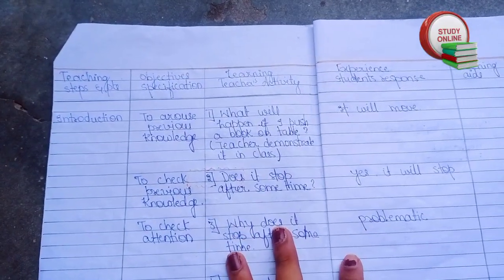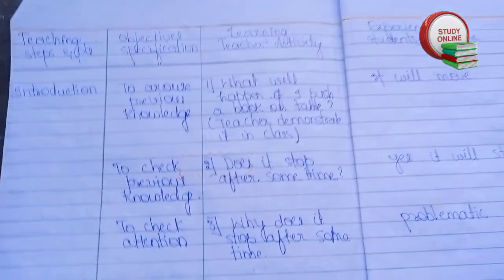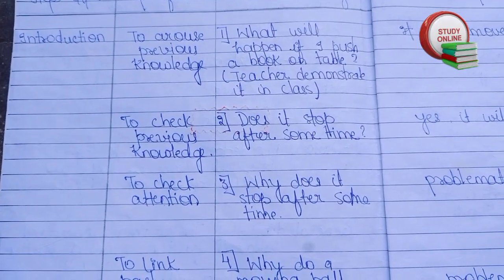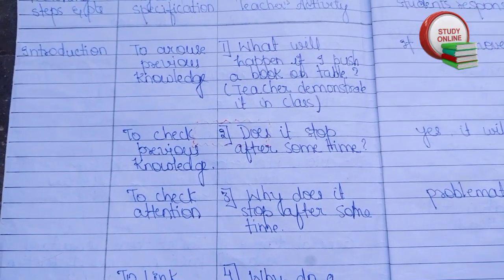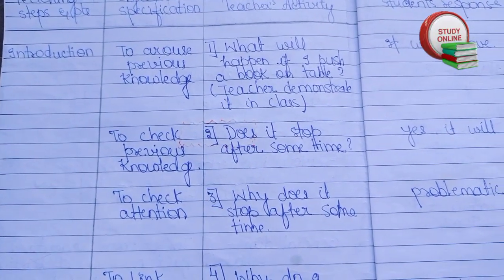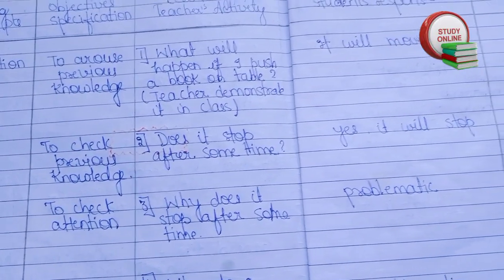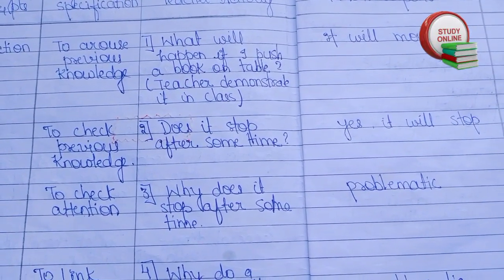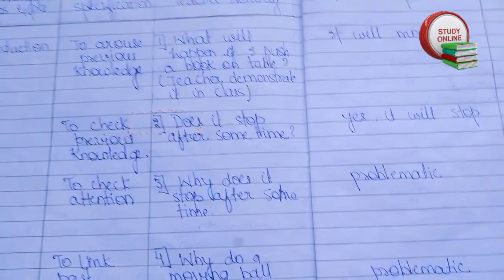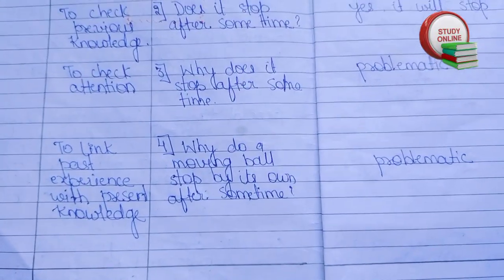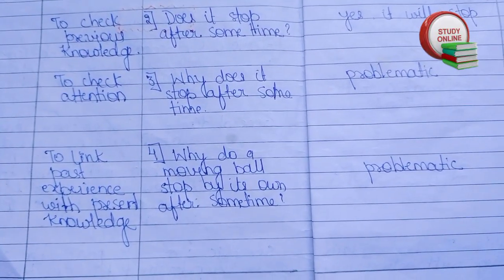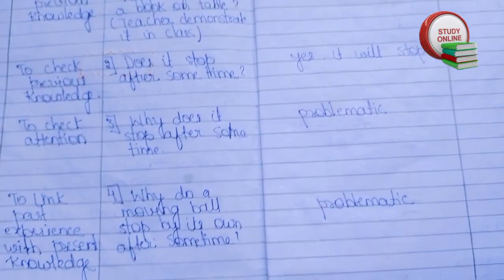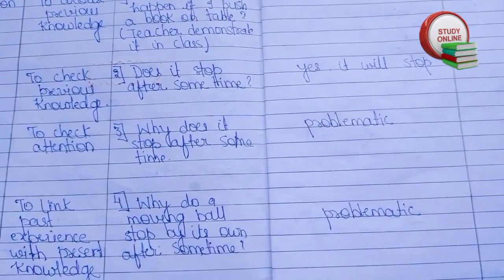For the introduction part, we can ask up to five questions — do not add more than that. The first question is: what will happen if I push a book on a table? The student will answer: it will move. Does it stop after some time? Yes. Why does it stop? Why do moving balls stop on their own after some time? These would be problematic questions for students.